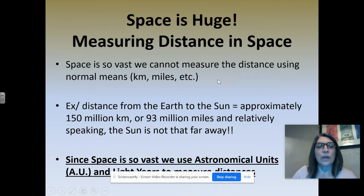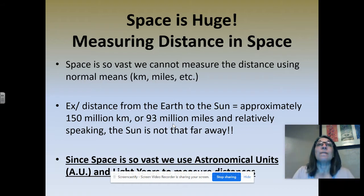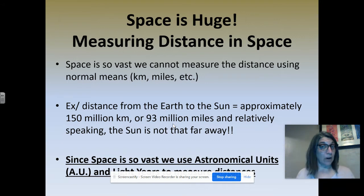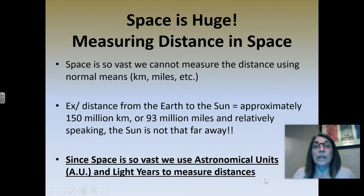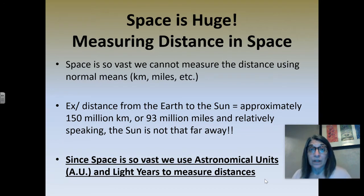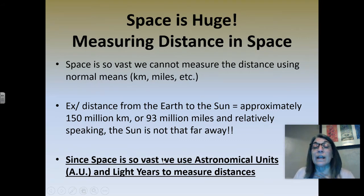Space is so vast we can't measure it in normal units. The distance from Earth to the sun is approximately 150 million kilometers or 93 million miles. So from Earth to the sun is 93 million miles — that's really far. But relatively speaking, in relation to other stars in our galaxy, the sun is actually pretty close, which is weird because 93 million miles is not close. Since space is so vast, we use something called astronomical units, or AU for short, and light years to talk about distances in space.